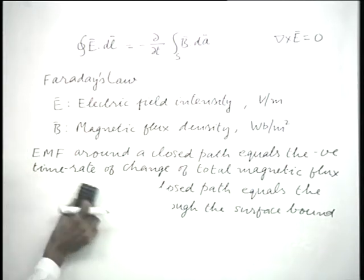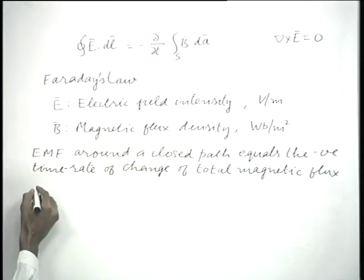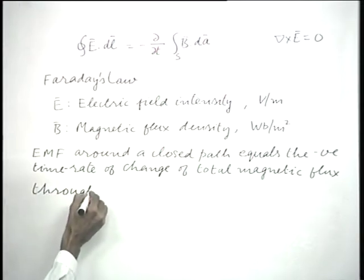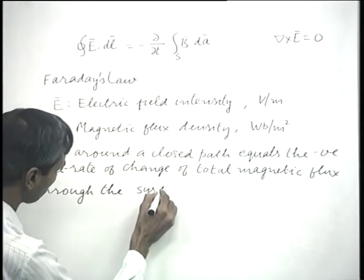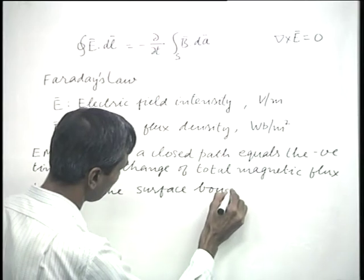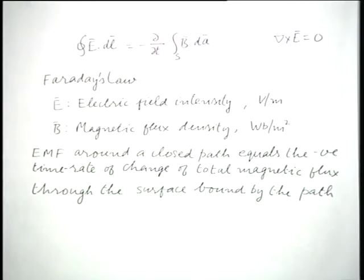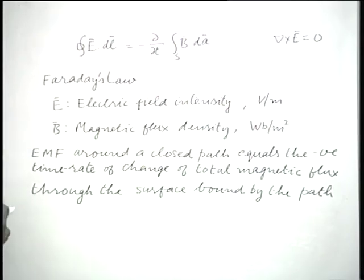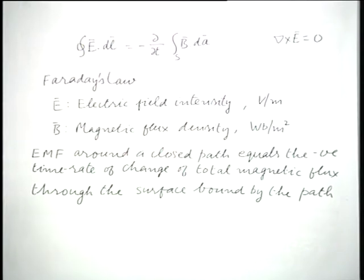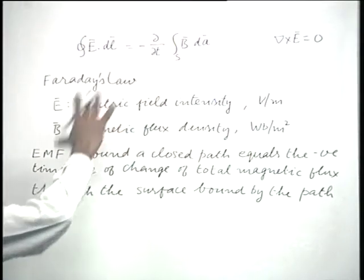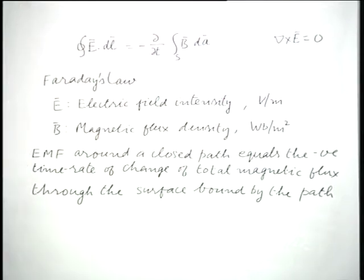The total magnetic flux may have a time rate of change either because the flux density itself is changing or because there is some motion involved. In this course, we will usually be considering stationary items, and therefore it will be the time rate of change of the magnetic flux which causes the generation of EMF.